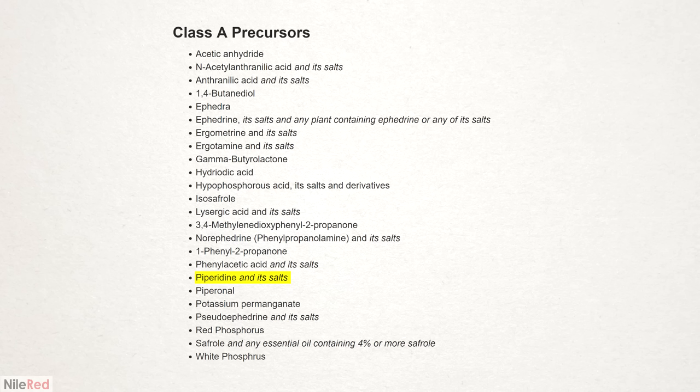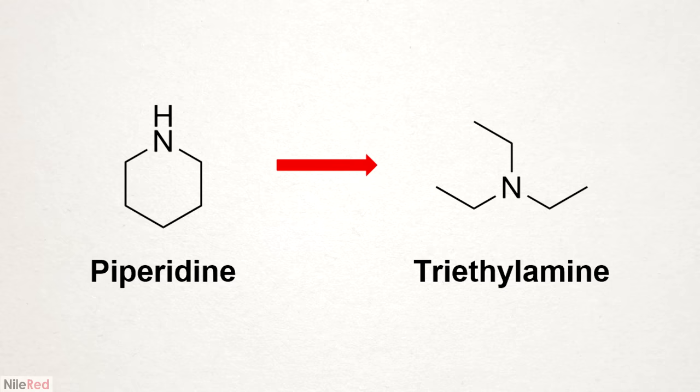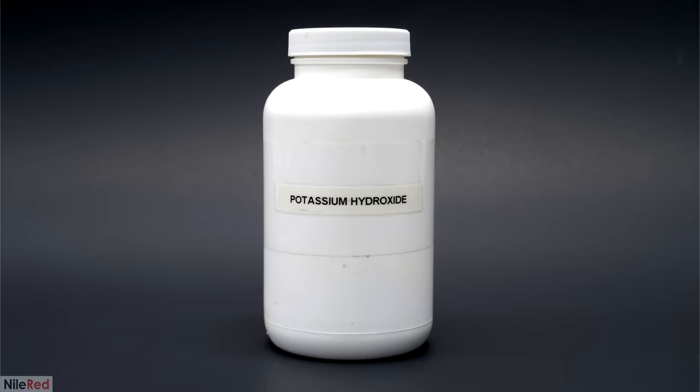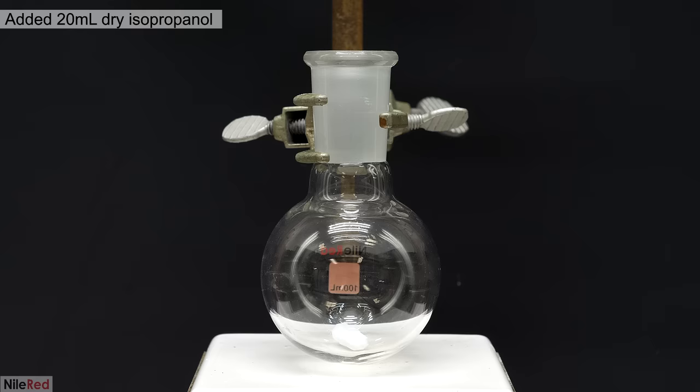Piperidine's unfortunately a controlled substance, so I didn't really want to buy it or use it in this prep. I instead switched it out for triethylamine, which I hoped would work just as well. Triethylamine's relatively easy to find online, and I've bought it before, but this bottle in particular was sent to me by a fan a long time ago. And the last ingredient was potassium hydroxide, which was pretty easy to find online.